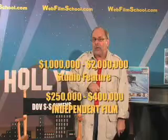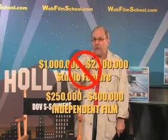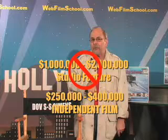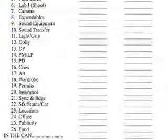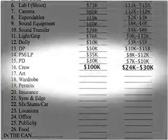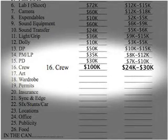What I'm showing you is how to make a Hollywood million to two million dollar feature, but how to do it independently for a low budget of $250,000 to $400,000. Right now we're on check number 16, crew. You've hired your key people — production manager, production designer, and cinematographer. Now let's hire the individual people.